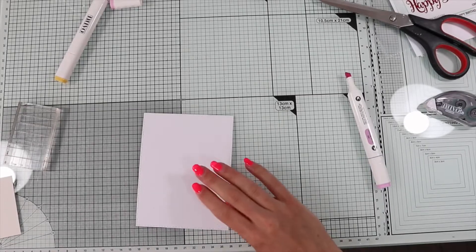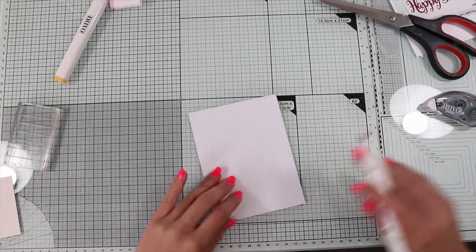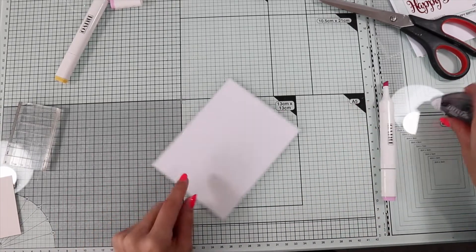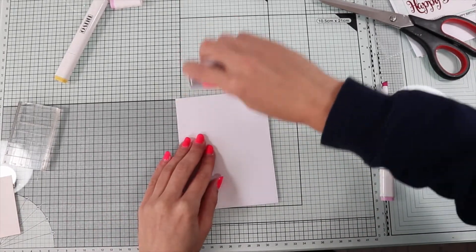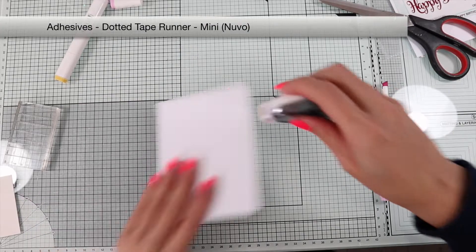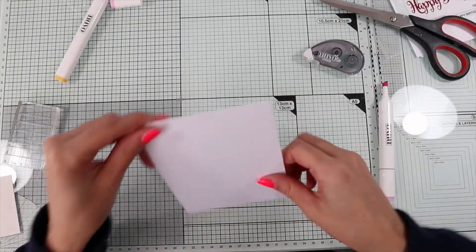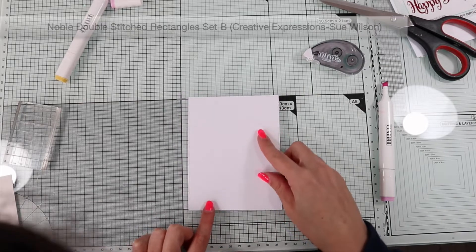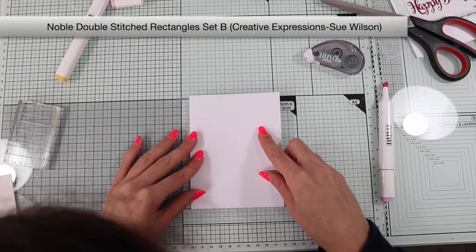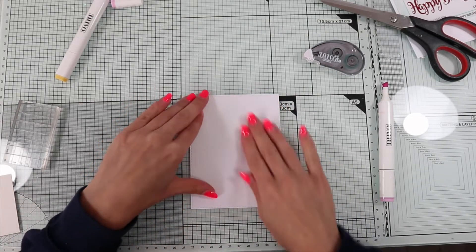For the first two cards I decided to use the markers to create my own background. With a repositionable roller glow, I temporarily fix on my work surface a panel which I die cut on white cardstock using a stitched rectangle die.